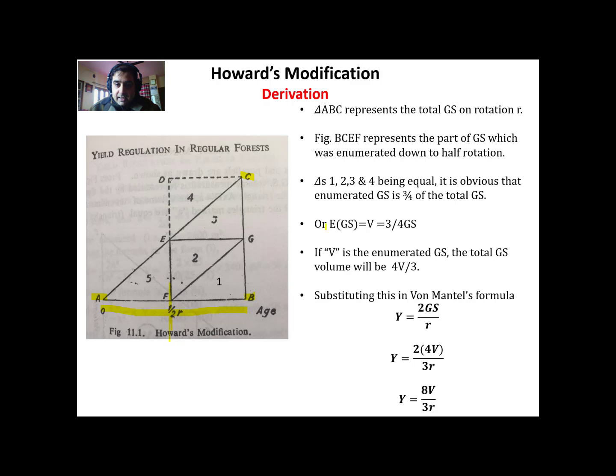If we call enumerated growing stock V, then V equals 3/4 of total GS, because total growing stock ABC is composed of four smaller triangles. The enumerated growing stock includes only triangles 1, 2, and 3. So enumerated growing stock is 3/4 of total growing stock.